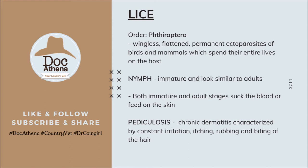A nymph is an immature form that looks very similar to adults — like adolescence in humans — but has not yet reached the adult stage and cannot reproduce yet. Both the immature and adult stages suck blood or feed on the skin, so even if they are still young, their nutritional source is already the same as the adult.